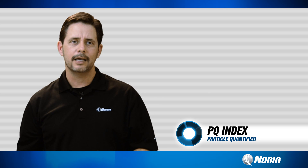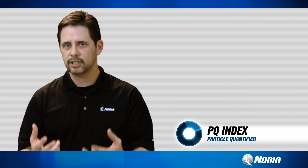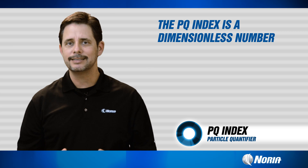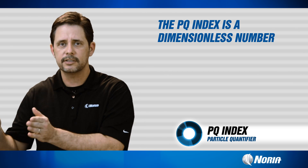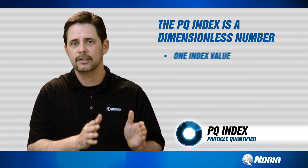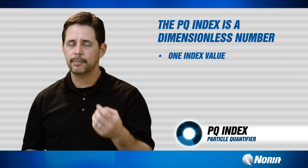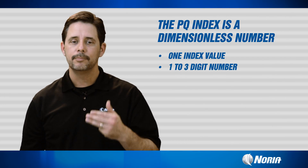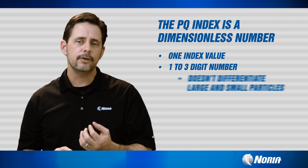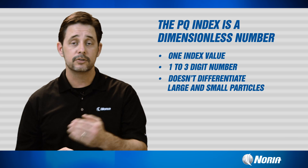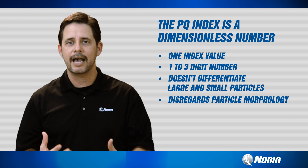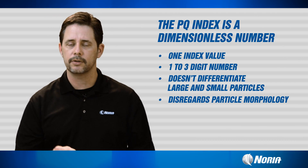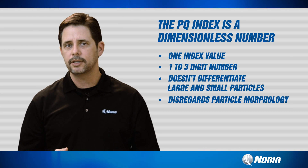Then we have particle quantifier, or the PQ index. The PQ index, like DR ferrography, is a dimensionless number, but that's where the similarities end. DR ferrography gives us two dimensionless numbers — ferrous large and ferrous small — while the PQ index gives us one single index value, which may be one, two, or three digits. The PQ index does not differentiate between large or small particles and doesn't consider particle morphology.